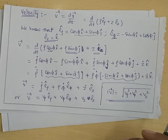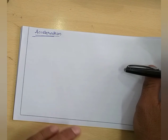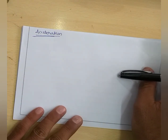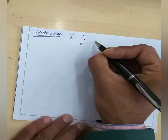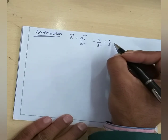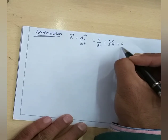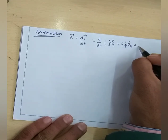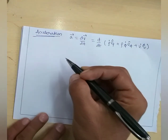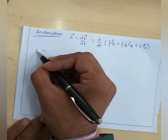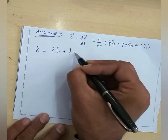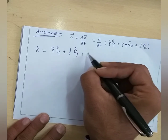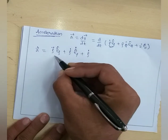This was the velocity in terms of the cylindrical coordinate system. Now we find acceleration. Acceleration is the rate of change of velocity, so a = dV/dt. With V = Rho-dot·E_rho-cap plus Rho·Phi-dot·E_phi-cap plus Z-dot·E_z-cap, differentiating gives: a = Rho-double-dot·E_rho-cap plus Rho-dot·E_rho-dot-cap plus Rho-dot·Phi-dot·E_phi-cap plus Rho·Phi-double-dot·E_phi-cap plus Rho·Phi-dot·E_phi-dot-cap plus Z-double-dot·E_z-cap plus Z-dot·E_z-dot-cap.